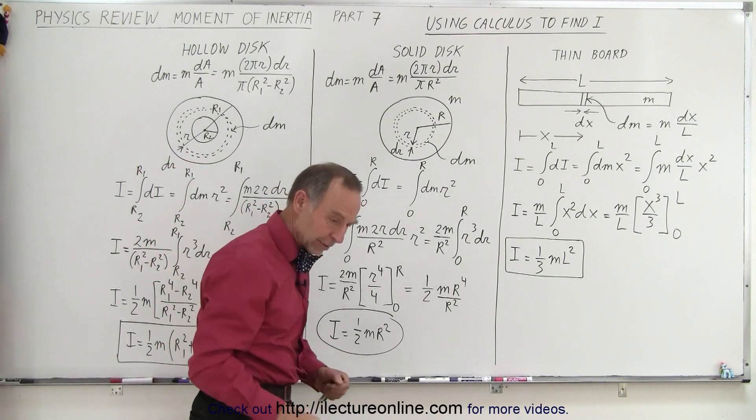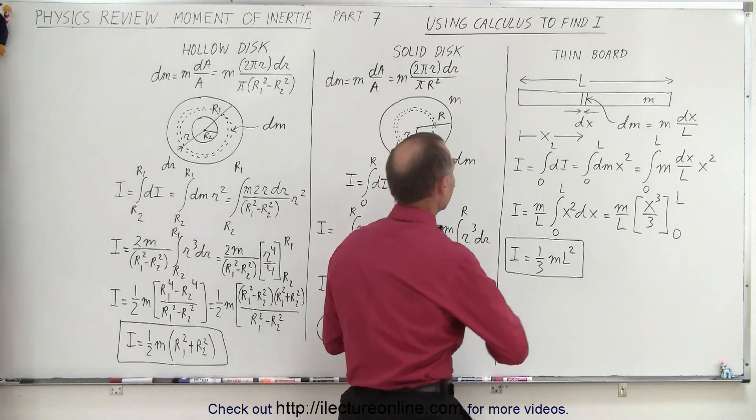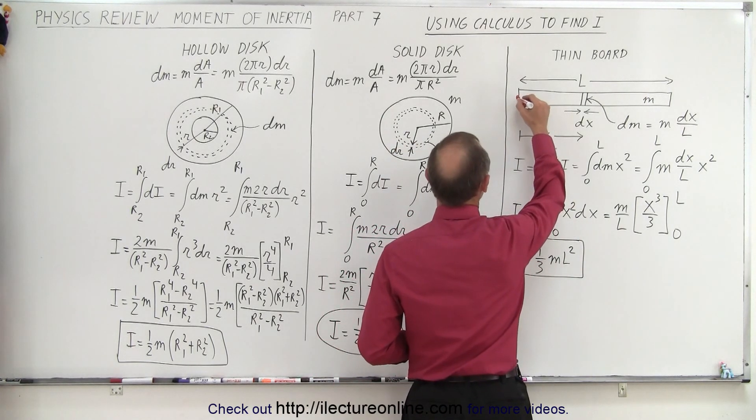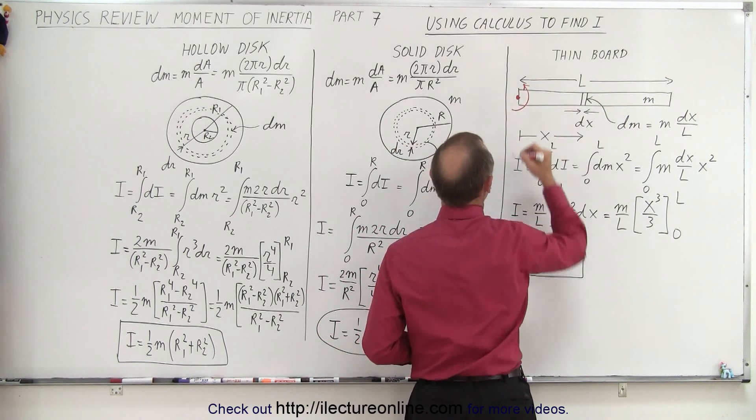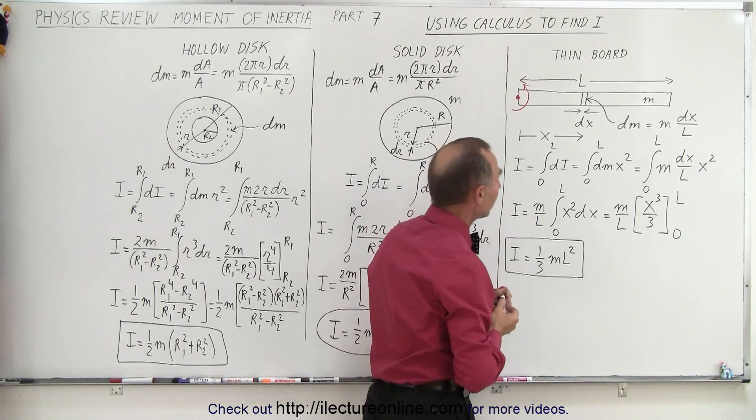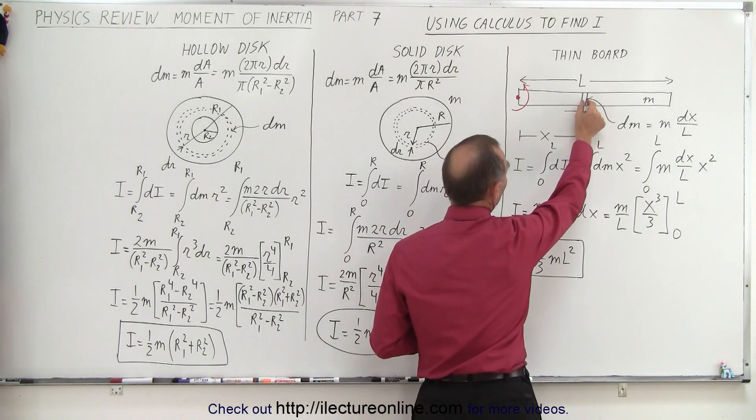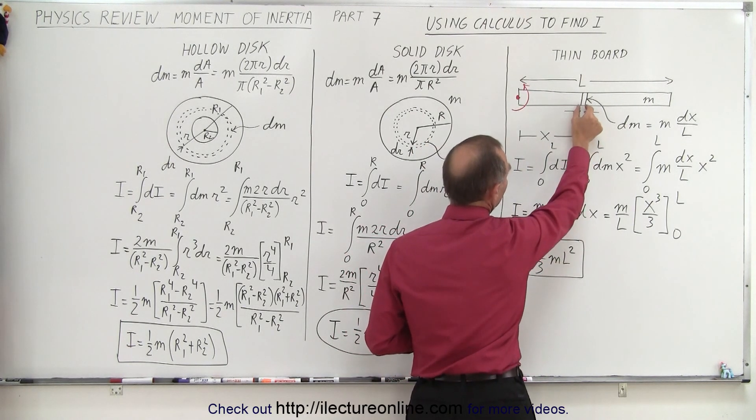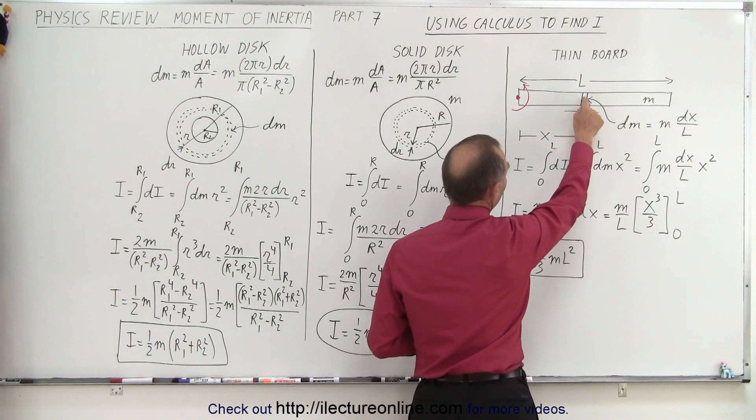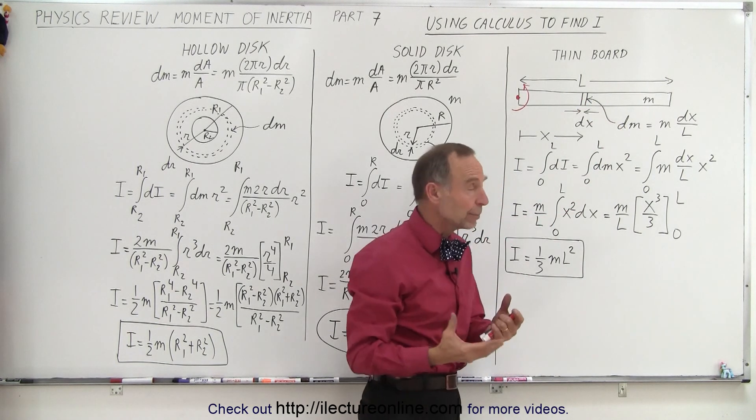So how do we do that? Well, assuming that we're going to rotate the disk about this point right here, how do we do that? Well, we find a small little segment on that thin board. The thickness of the segment is dx, and then the mass of that segment is dm. How do we find dm?